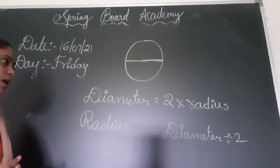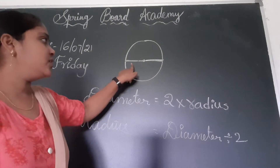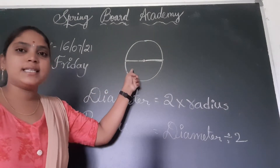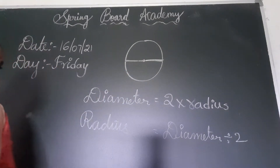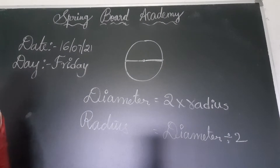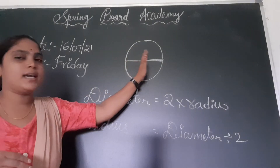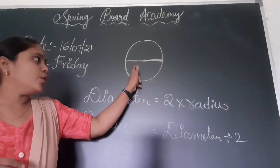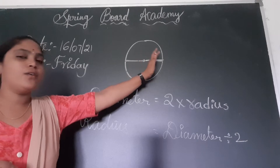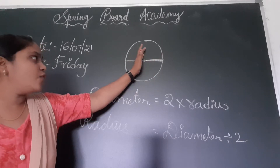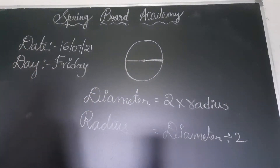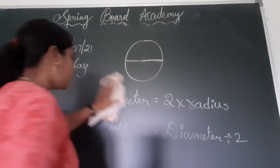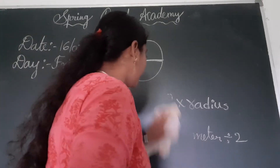Here we can identify: diameter is twice the radius, and radius is half of the diameter. Half of the diameter is radius — you can remember this too.